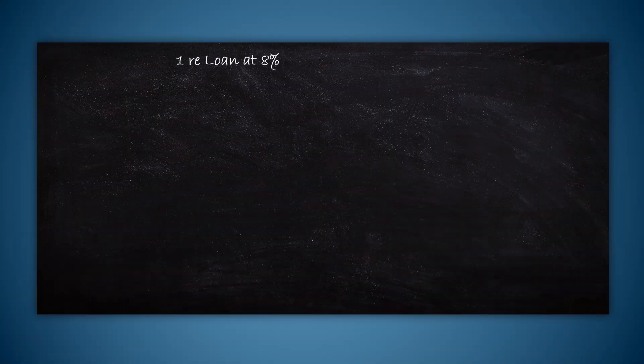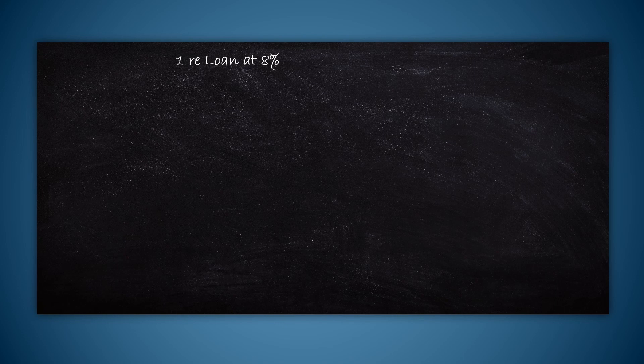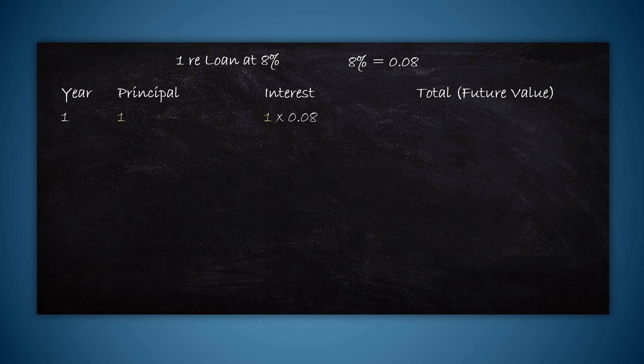Now that we are done with this, let's imagine you are giving a one rupee loan at 8 percent per annum. 8 percent is 0.08. If we want 8 percent of one rupee, we have to take 1 into 0.08, which is nothing but 0.08. This is the interest part. Principal is one. The total outstanding amount at the end of year one will be 1 plus 0.08, which is 1.08.